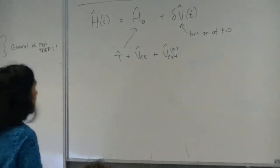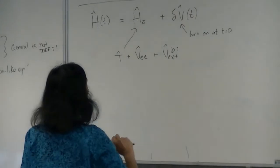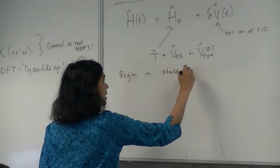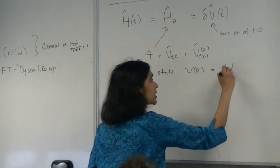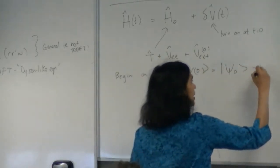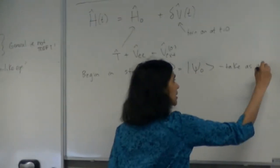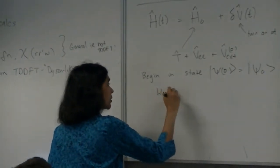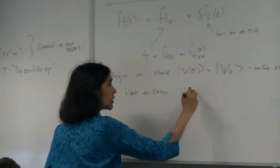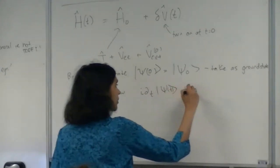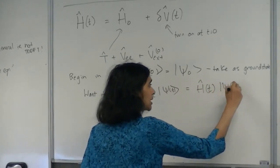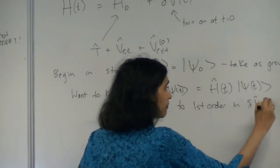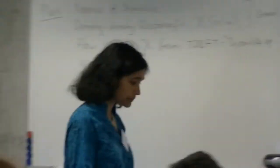Please stop me if you have a question as we go along. So this is our Hamiltonian, and we begin in a state psi zero, which we're going to take to be the ground state. The idea in perturbation theory is that we want to solve — we want to know what the solution of i d/dt psi equals H of t psi of t is to first order in delta v.